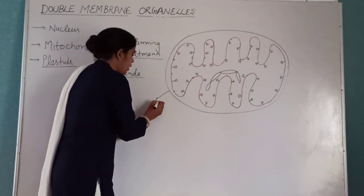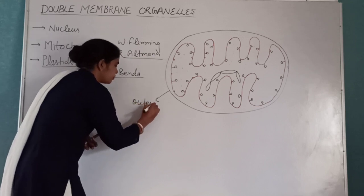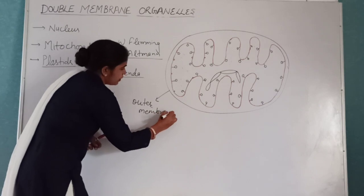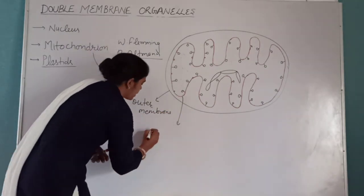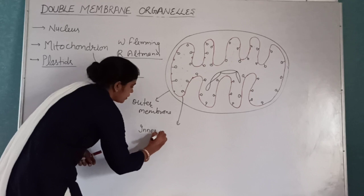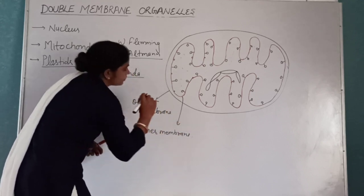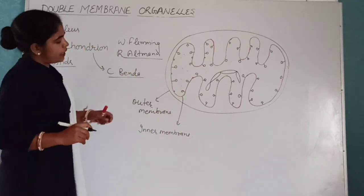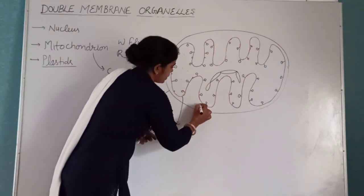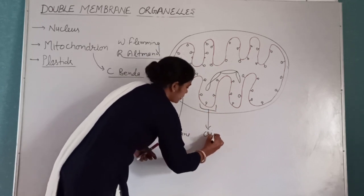This is the outer membrane, and this one is the inner membrane. The inner membrane has foldings, and these foldings of the inner membrane are called cristae.